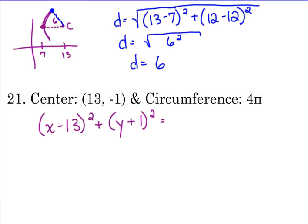Again, we need the radius for the other side. They don't give us the radius. They give us the circumference. So what is circumference equal to? What's the circumference formula? How do we find the circumference of a circle? 2πr.